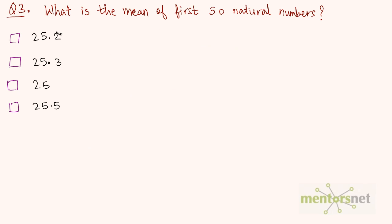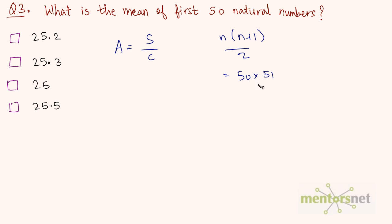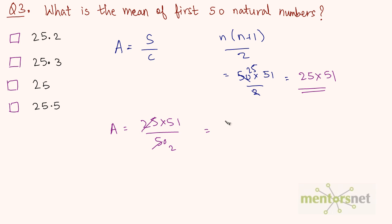Let us move on to the third question: What is the mean of the first 50 natural numbers? Mean means average. Average is equal to sum divided by count, and count is 50. There is a formula for the sum of natural numbers up to n, which is n times (n+1) divided by 2. Here n equals 50, so the sum is 50 times 51 divided by 2, which is 25 times 51. The average is 25 times 51 divided by 50, which gives 51 divided by 2, equal to 25.5. So the answer is option A.